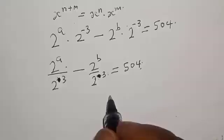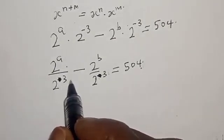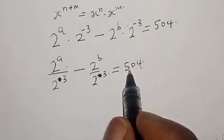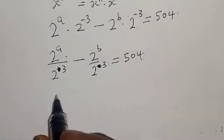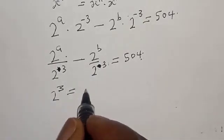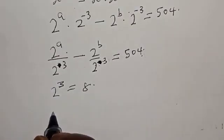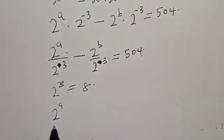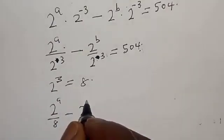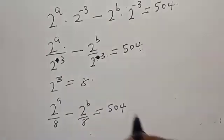Therefore we have 2 raised to power a over 2 raised to power 3 minus 2 raised to power b over 2 raised to power 3, equal to 5/4. Note that 2 raised to power 3 equals 8. Therefore our equation becomes 2 raised to power a over 8 minus 2 raised to power b over 8, equal to 5/4.